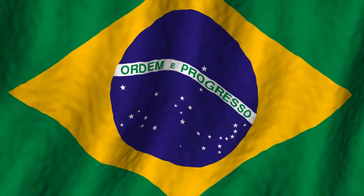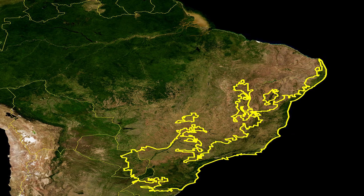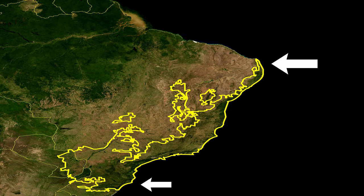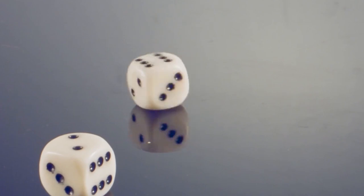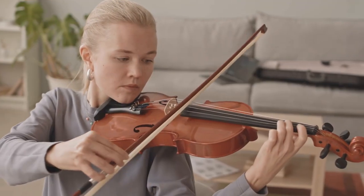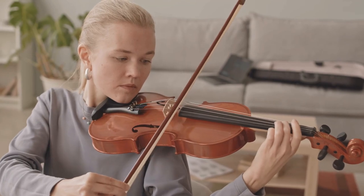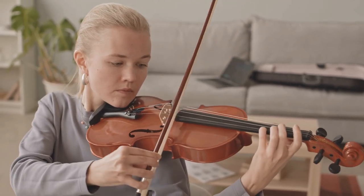Brazil wood trees are found in, well, Brazil — specifically the Atlantic forest region of Brazil, which stretches from the state of Rio Grande do Norte to Rio Grande do Sul before going inland into parts of Argentina and Paraguay. Dye isn't the only thing the tree has been used for. It's often regarded as the perfect wood for musical bows — if you've ever played a violin, for example, there's a good chance you've used Brazil wood.